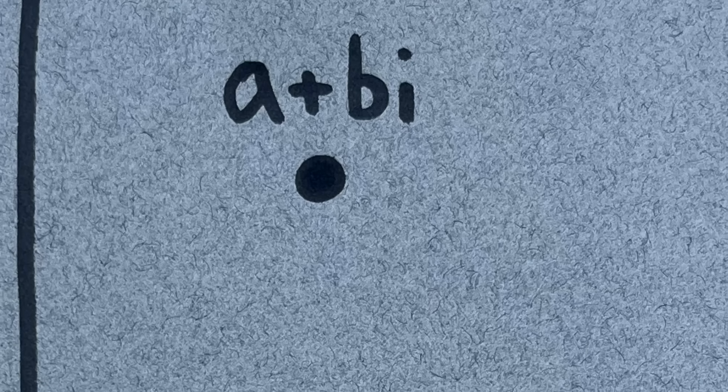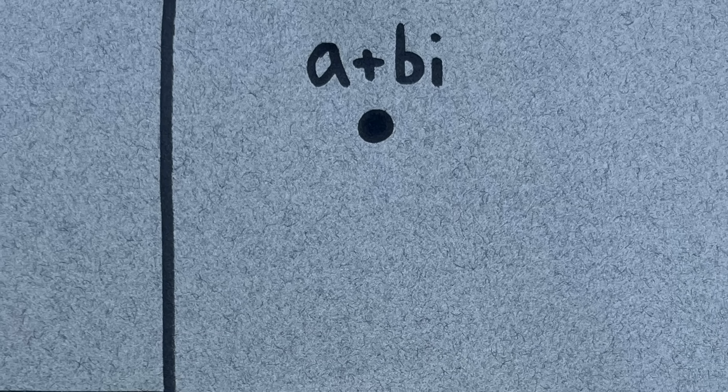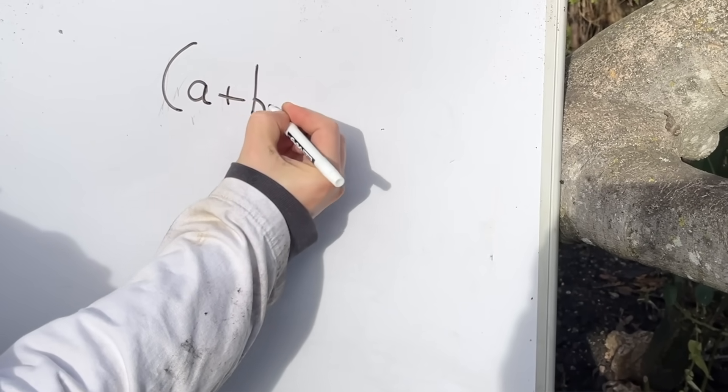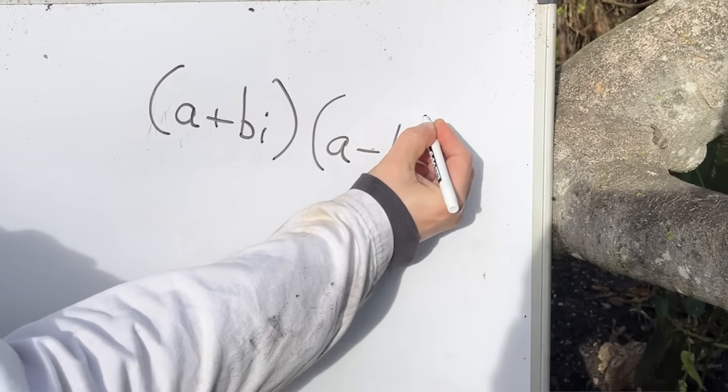There is a certain type of pair of number that multiplies together in a very neat way. A number, some a plus bi, and what's called its complex conjugate, which is a minus bi.